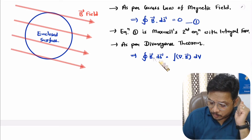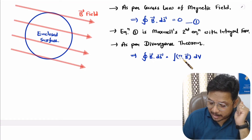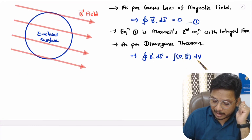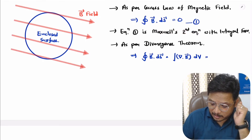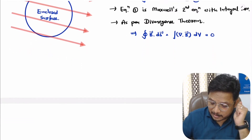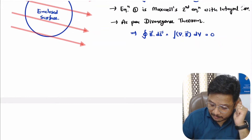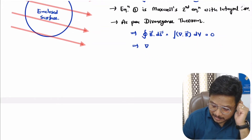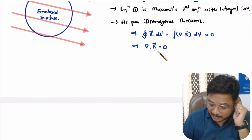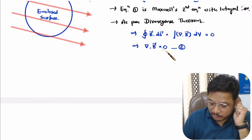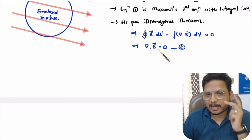Here the function is the magnetic field B, so the surface integration of the magnetic field equals the divergence of B with volume integration. As per Gauss's law of magnetic field this equals zero, so the divergence of B times the volume integration is also zero. Therefore, divergence of B equals zero, and this is the point form or differential form of Maxwell's second equation.